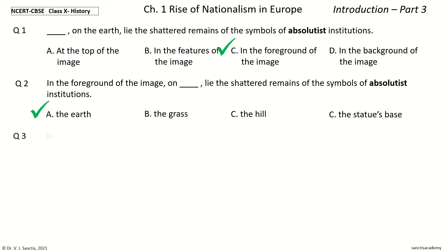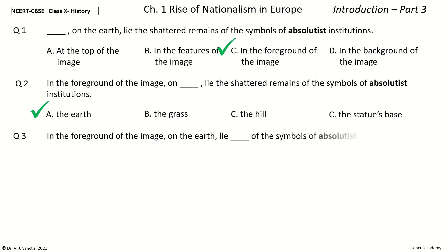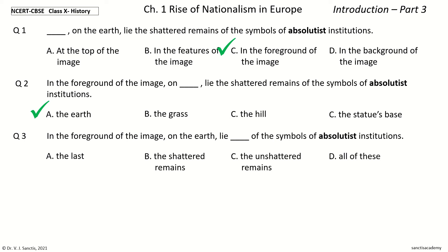Question three: In the foreground of the image, on the earth lie ___ of the symbols of absolutist institutions. The options are: the last, the shattered remains, the unshattered remains, all of these. The answer is: the shattered remains.